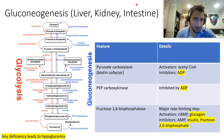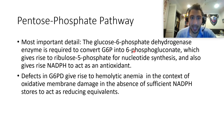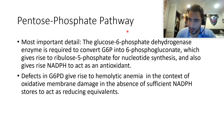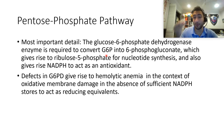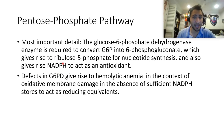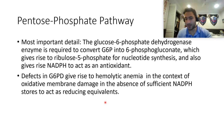In the pentose phosphate pathway, glucose-6-phosphate dehydrogenase (G6PD) converts glucose-6-phosphate to 6-phosphogluconate, giving rise to 5-carbon sugars and generating NADPH. NADPH interacts with glutathione as an antioxidant. Defects in G6PD cause hemolytic anemia in the context of oxidative stress because without sufficient NADPH, you can't reduce oxidative species.